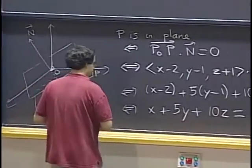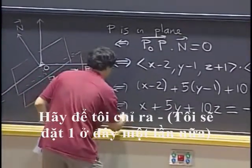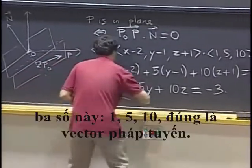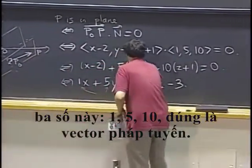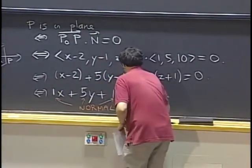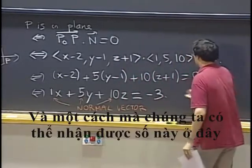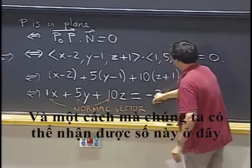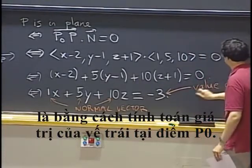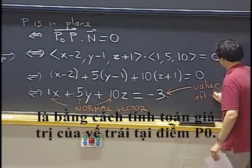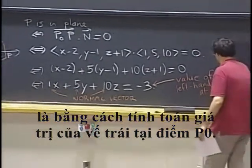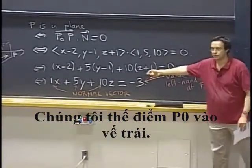OK, so let me point out, maybe I'll put a one here again. These three numbers, 1, 5, 10 are exactly the normal vector. And one way that we can get this number here is by computing the value of the left-hand side at the point P0. We plug in the point P0 into the left-hand side.